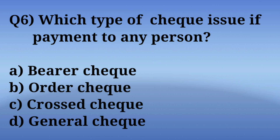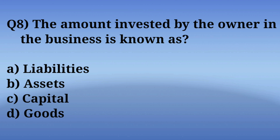Question number 8: The amount invested by the owner in the business is known as what? Options are: A. Liabilities, B. Assets, C. Capital, D. Goods. The correct answer is Option C — Capital. The definition states: the amount invested by the owner in the business is known as capital.